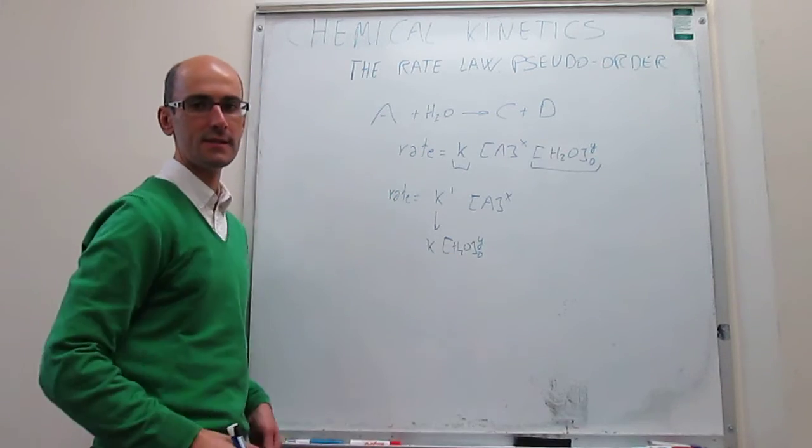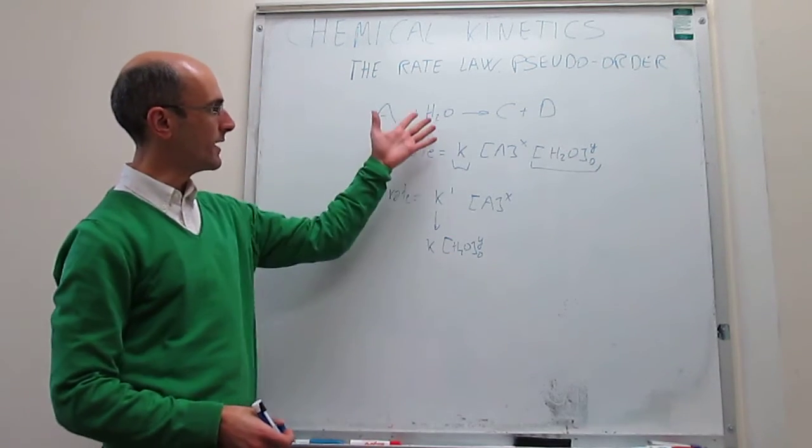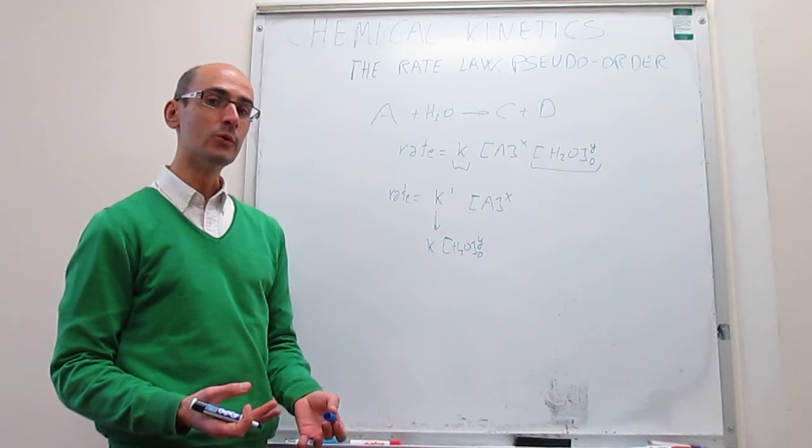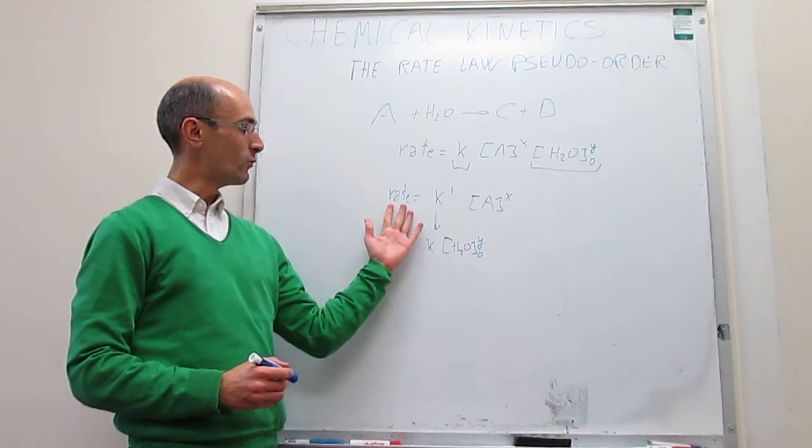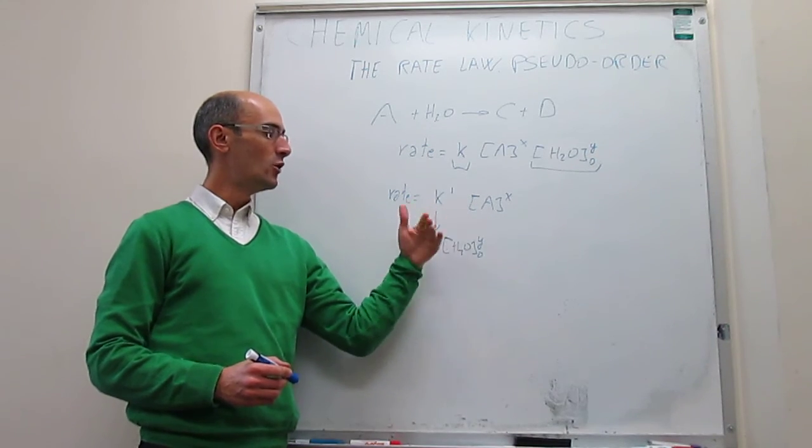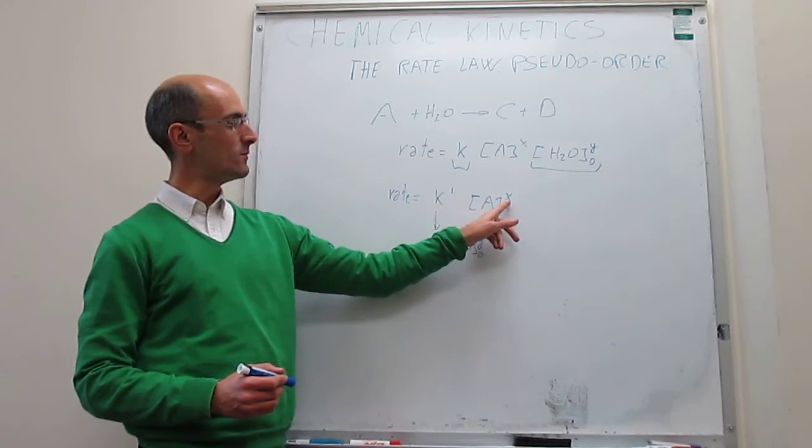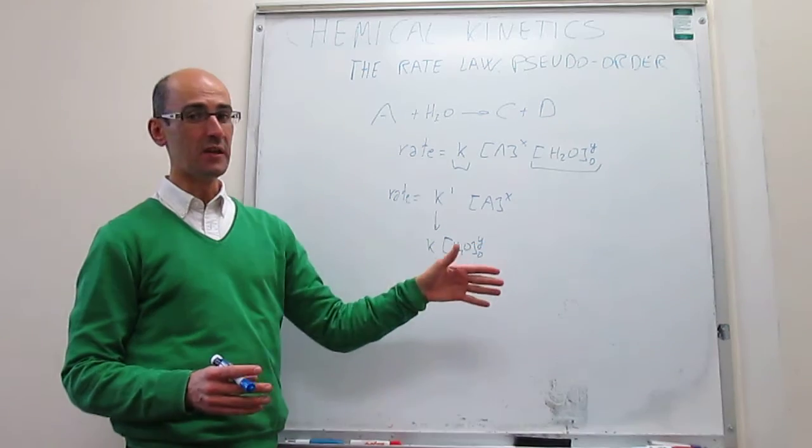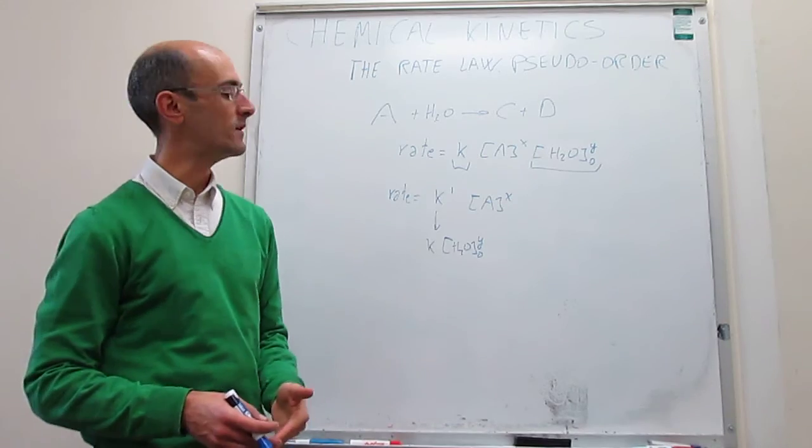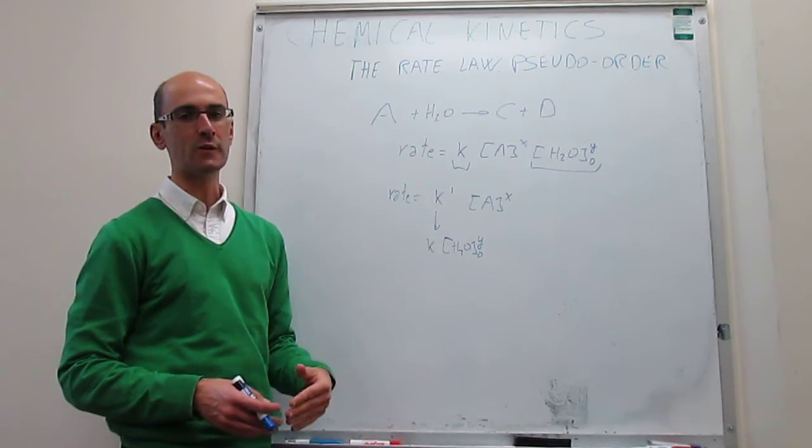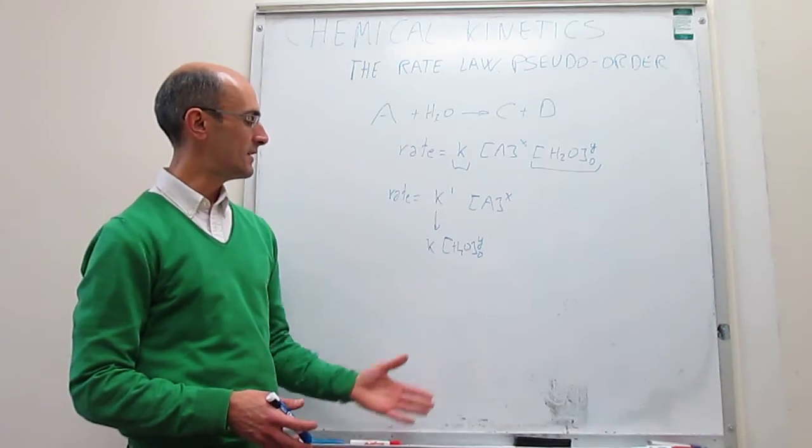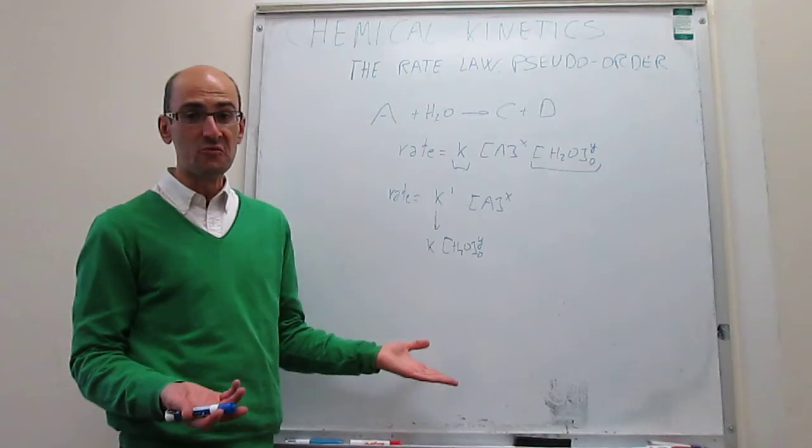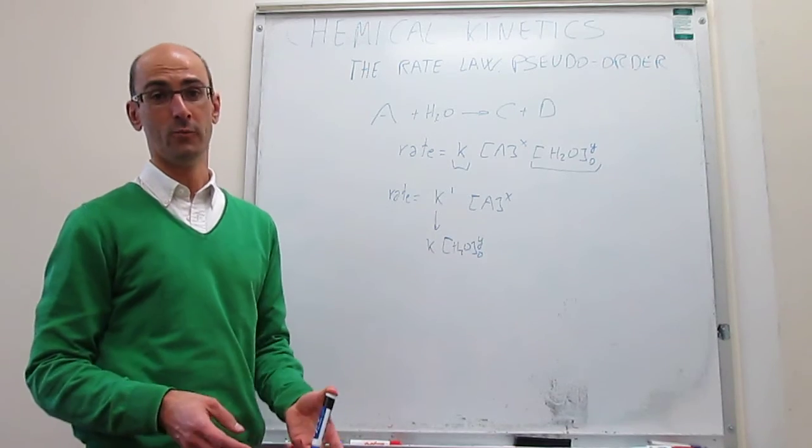And again, this is a constant number when we're writing the reaction with water as a solvent. So this is the concept of the pseudo-order of the reaction. In this particular case, when we study this rate law, we will do experiments to determine the order of the reaction with respect to A. It will not be of interest to us to determine the reaction order with respect to water, because water is going to be in a constant concentration.